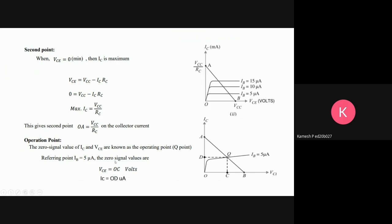Referring to IB equal to 5 microamperes, when it is 5 microamperes, you can find IC by IC equals beta times IB. Then by substituting the IC value in the equation VCE equals VCC minus IC*RC, you can get the VCE value.